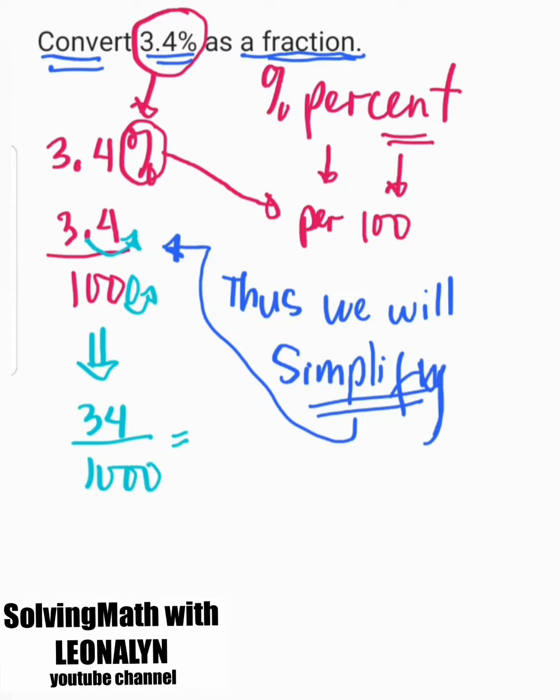So that will be 34 over 1000. Now we have to find the greatest common factor to simplify this 34 over 1000.